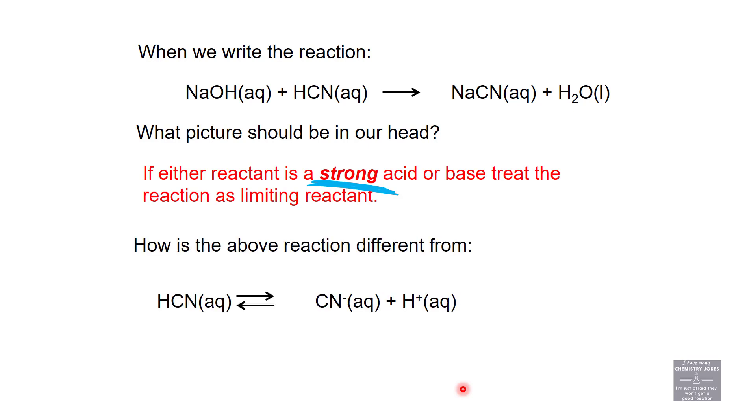How is that top reaction different from this kind of equation? This equation is a KA equation - a weak acid in solution all by itself, not being combined with a strong base. It's almost exclusively HCN with a tiny amount of CN- and H+. We treat that very differently as a whole equilibrium process, unlike this strong reacting with weak.